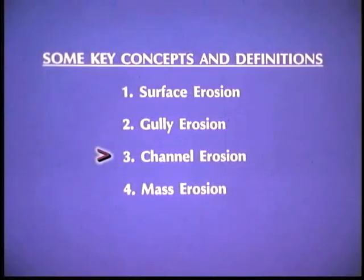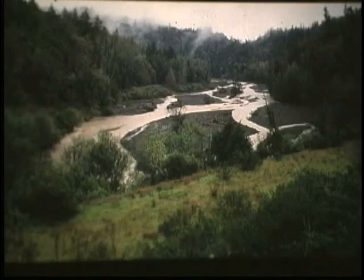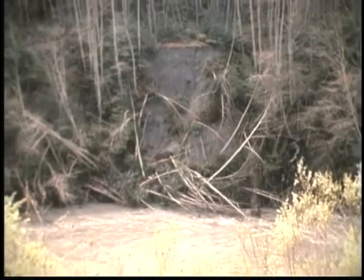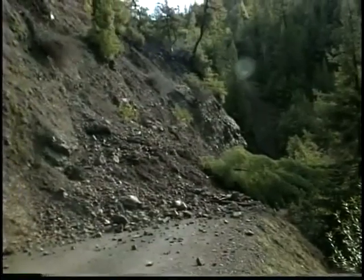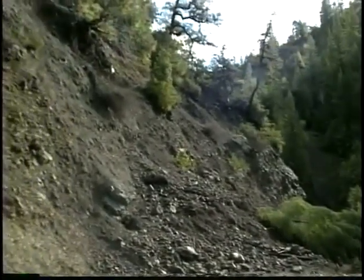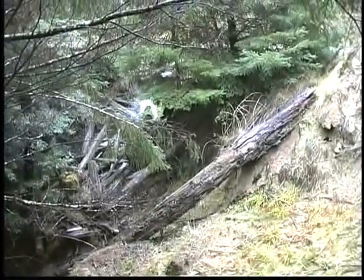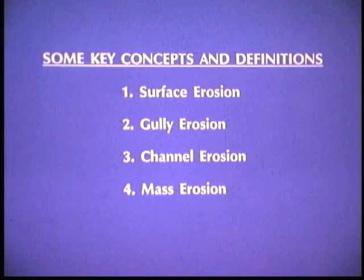Channel erosion is constituted either from down-cutting of the bed or bank erosion, which tends to either widen or cause the channel to move back and forth across the landscape. Then there is mass erosion and any type of mass failure — landslide erosion. Associated with road systems, we see cut bank failures that land on the road surface, or fill slope failures that move down the hillside and may or may not get into a stream channel. The four basic processes are really the only ones you have to worry about. If you understand and can control or prevent them, you'll be most of the way towards preventing sediment from being delivered to stream channels.